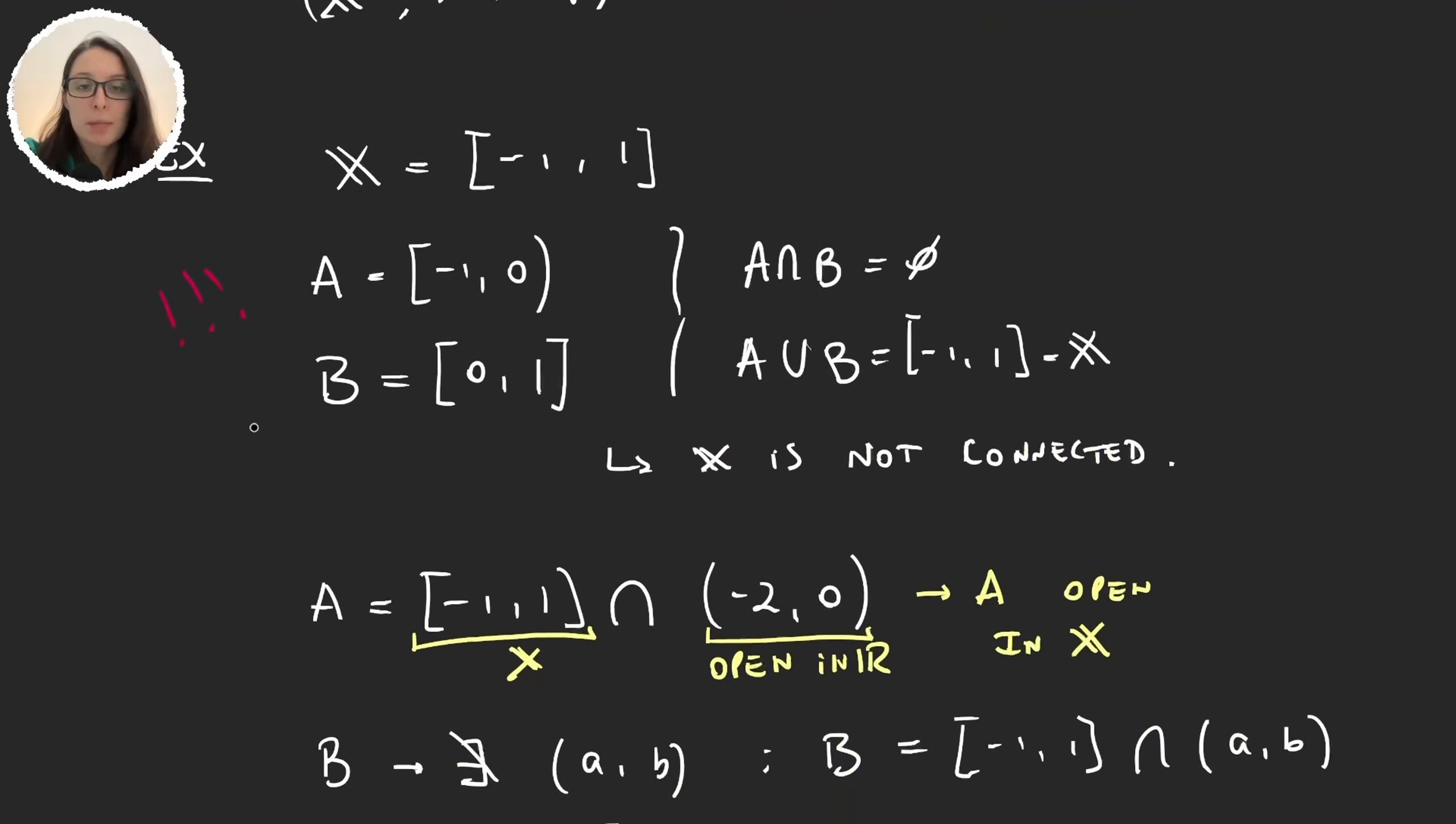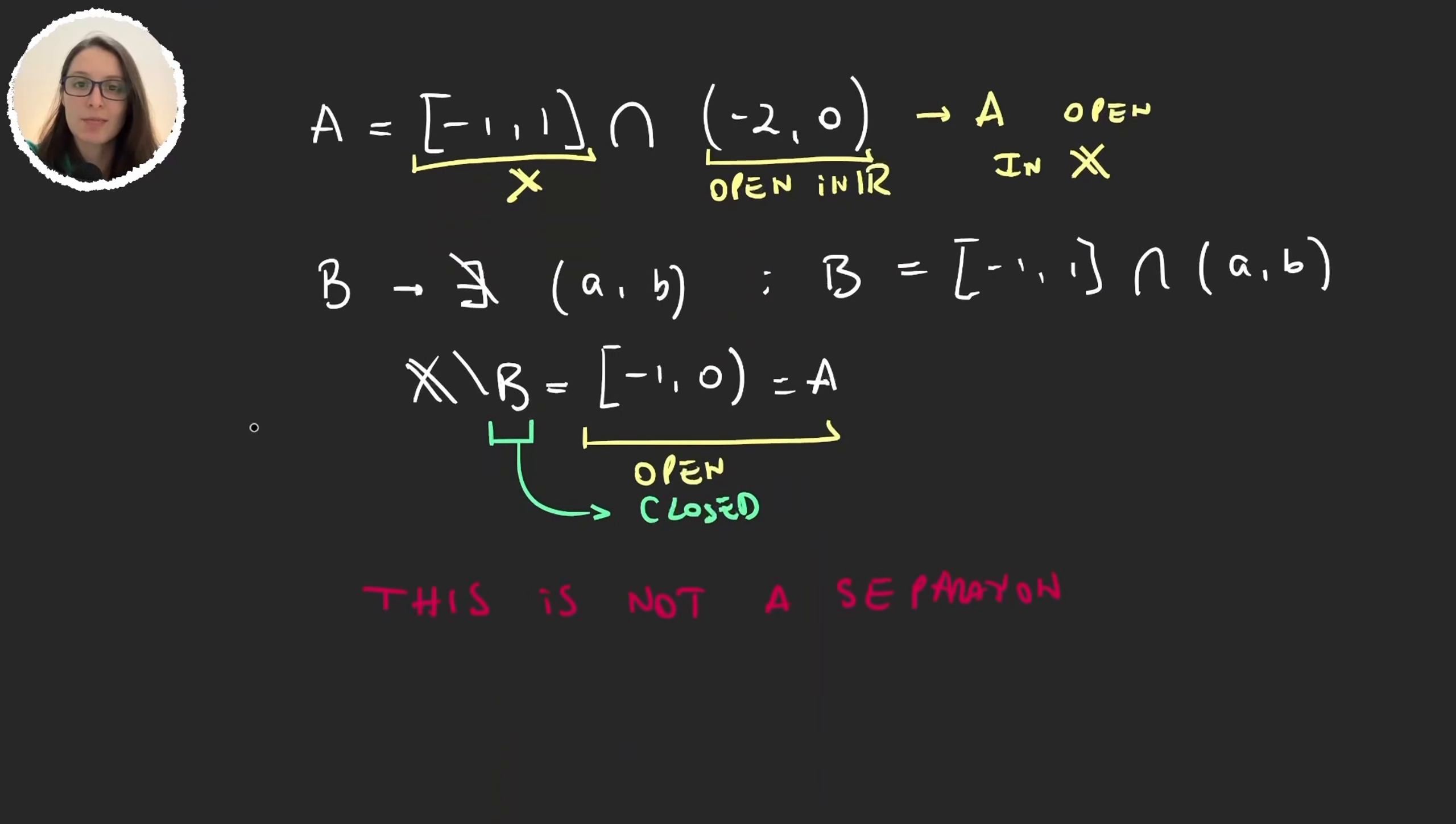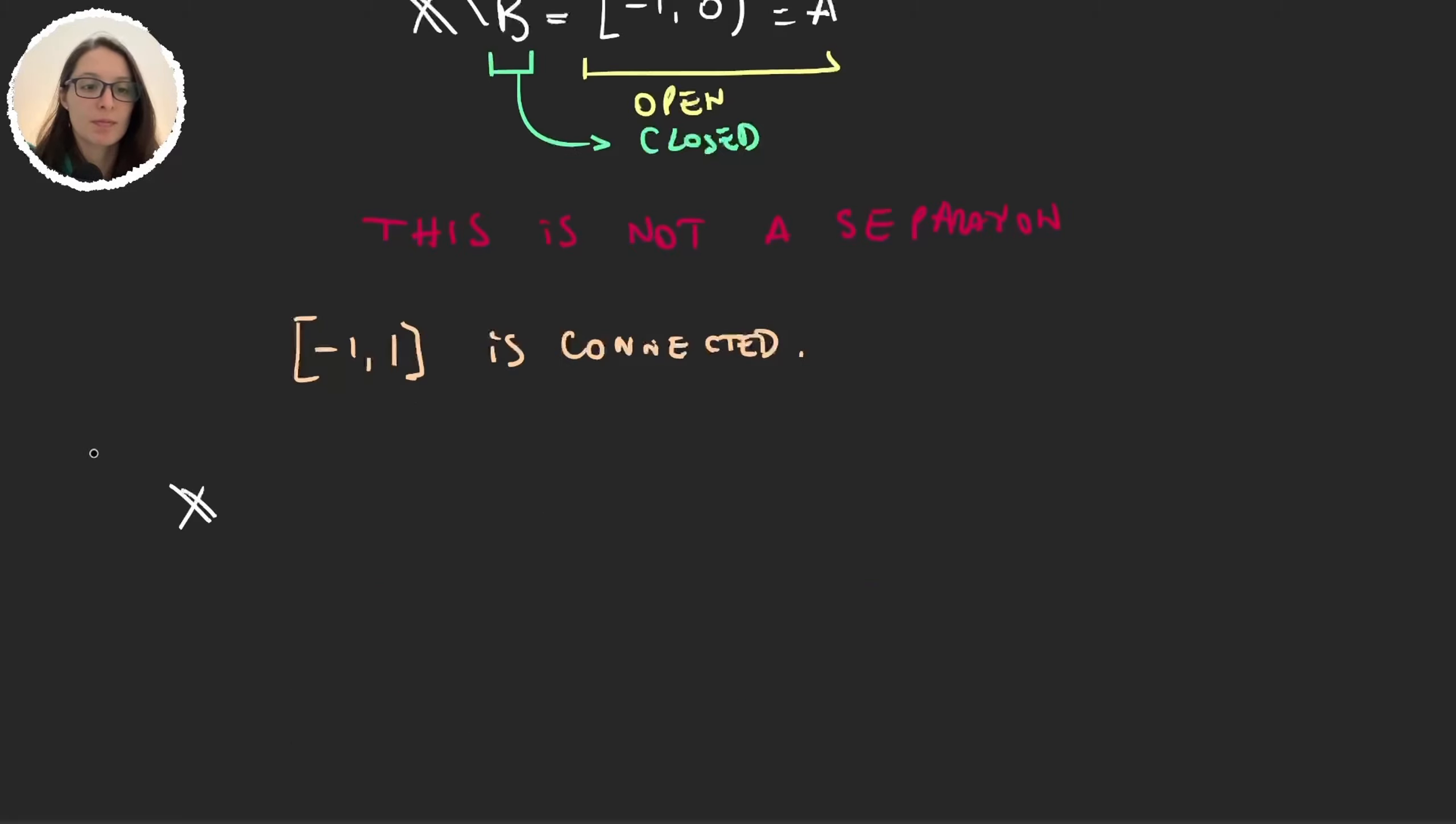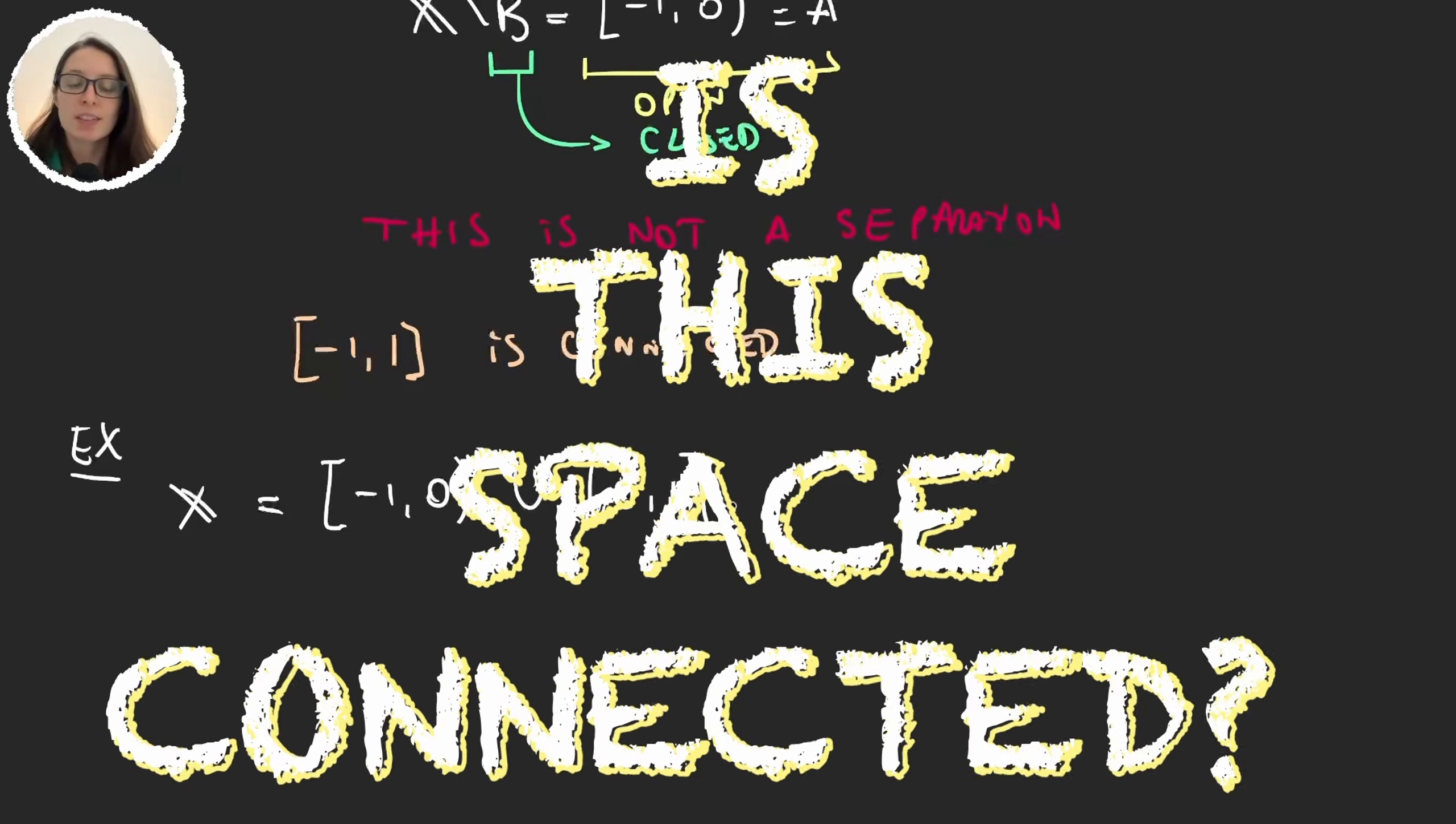In fact, [-1,1] is connected. If our set X is [-1,0] union [0,1], what do you think? Is this space connected?